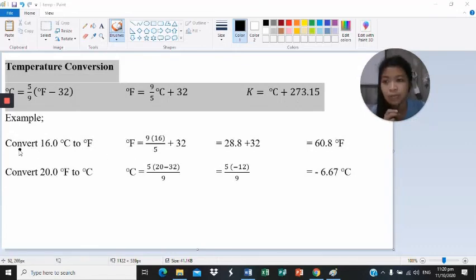For the example, convert 16 degrees Celsius to Fahrenheit. For the formula, we have degree Fahrenheit equals 9 multiplied by 16 divided by 5 plus 32. We have 28.8 plus 32. The answer will be 60.8 degrees Fahrenheit.